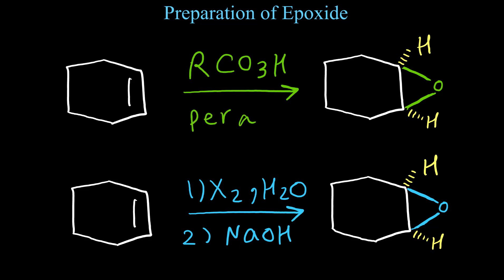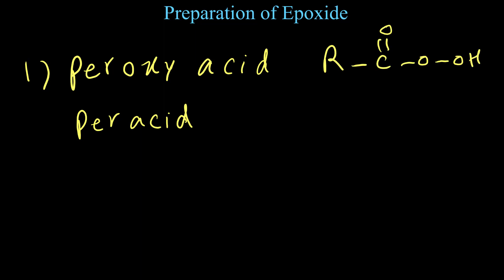Or we call it peracid, and the second method uses the halohydrin intermediate. First I'd like to start with peroxy acid. The first reaction uses peroxy acid, or sometimes we call it just peroxy acid. This is the general formula for peroxy acid.